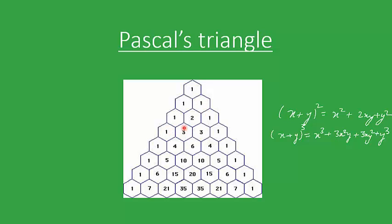Similarly, if you see this 3, there are two hexagons, one of which contains 1 and the other contains 2, so the value in this hexagon is the sum of those two. And if you try to look at this 20, we have two hexagons touching its surface with values 10 and 10, so we get 20.